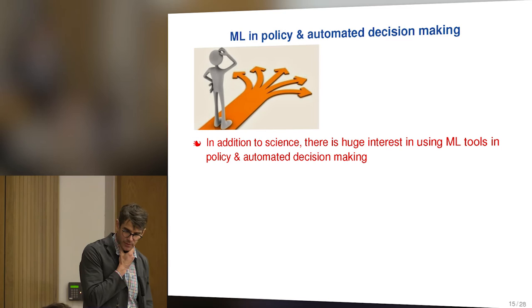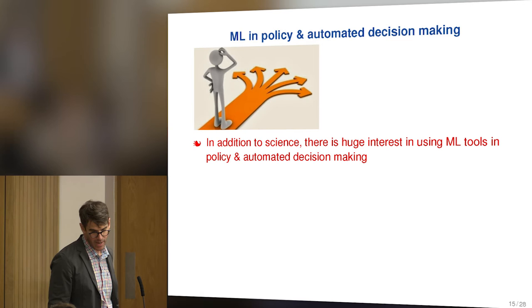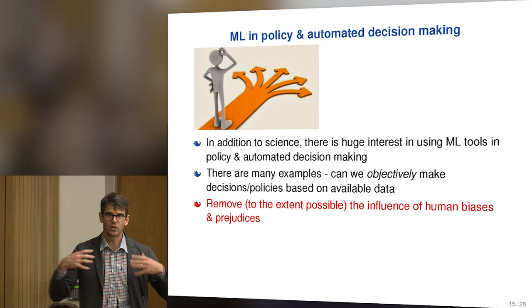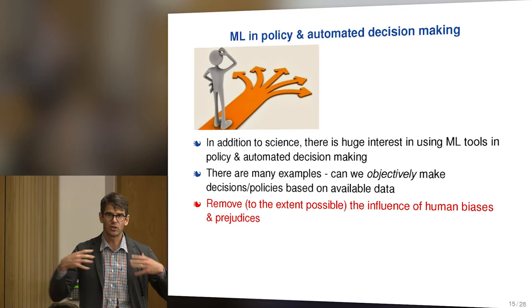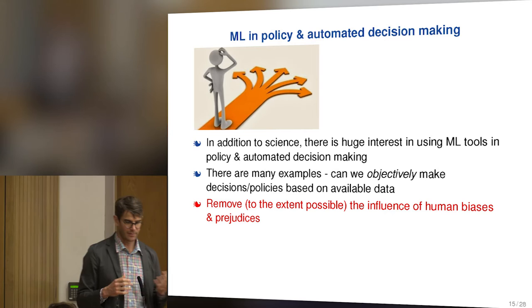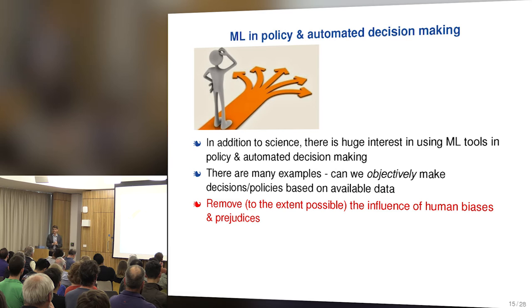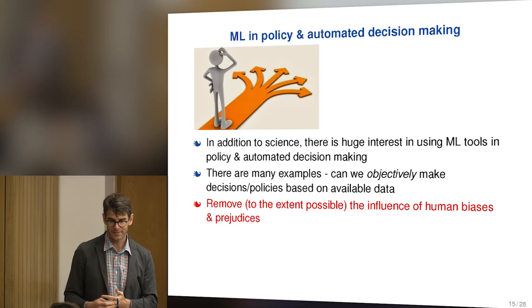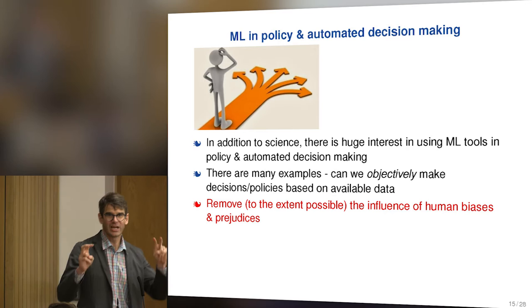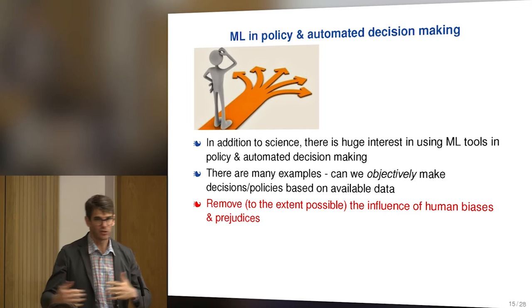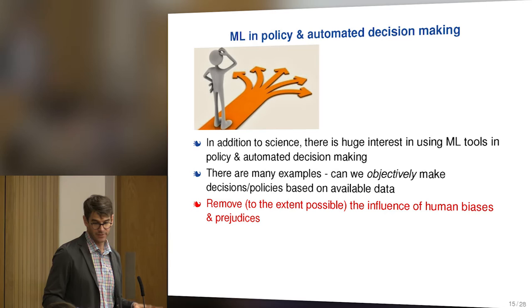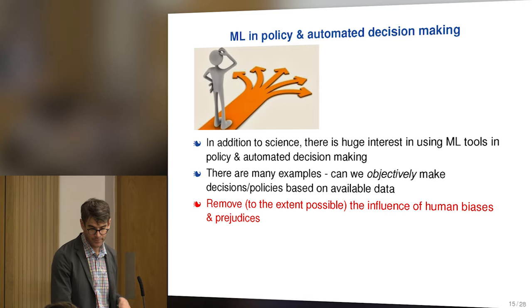There's a lot of interest in using machine learning tools in policy and to automate decision making, partly because we want some sort of objective decision maker — any human you can imagine is very biased. At the Environmental Protection Agency in the US, you have an administrator quite different from the one under Obama. Can we have a robot take the data and produce some sort of objective policy recommendation that humans could then look at? That would be amazing in many different domains. Machine learning people have started working on these things, trying to remove to the extent possible the influence of human biases and prejudices.